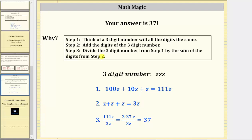And then finally, step three was to divide the three-digit number from step one by the sum of the digits from step two, which in our case is 111z divided by 3z.